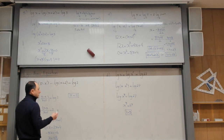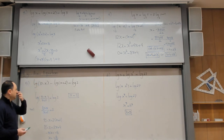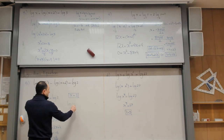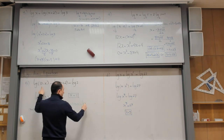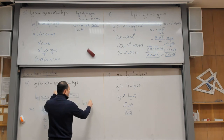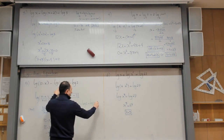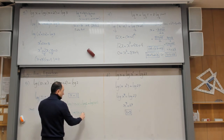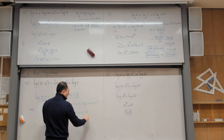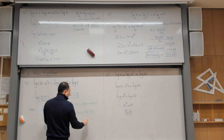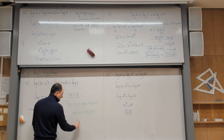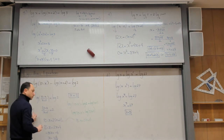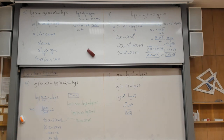An alternative strategy: keep log(10-x) on the left and move -log(x+2) to the right as +log(x+2). Then combine the right side: log(2·(x+2)). Eliminating logs gives 10-x = 2(x+2), the same equation. Both approaches work.